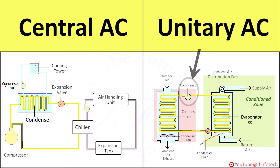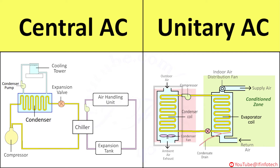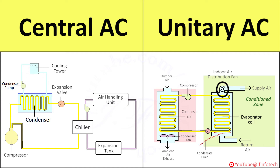The compressor circulates the refrigerant gas, increasing its pressure and temperature, and discharges it to the condenser. The condenser removes heat from the refrigerant and the gas changes phase to liquid. The evaporator fan collects warm air and passes it over the coil containing liquid refrigerant. The fan system then blows this cold air back into the room, lowering the overall temperature of the room.